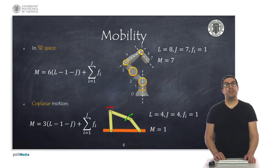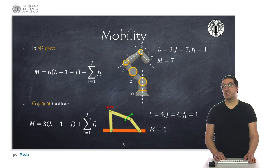The mobility analysis of an articulated robotic system will depend on the number of links L, including the fixed link, as well as the number of joints J, and the degrees of freedom for each of the joints Fi, following the mobility formula shown here.